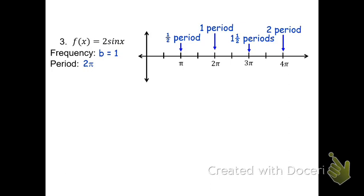Now to fill in the quarter periods, we'll take half of pi. Half of pi is pi over 2. Counting by half pi's: half plus half is 1, that's the half period. 1pi plus another half is going to be 3 halves. 3 halves plus another half would be 4 halves, or 2pi. 4 halves plus another half would be 5 halves, so 5pi over 2. 5 halves plus another half is 6 halves, which is 3pi. 6 halves plus one more half would be 7 halves, 7pi over 2. And 7 halves plus another half is going to be 8 halves, 8pi over 2 being 4pi.